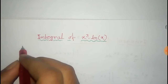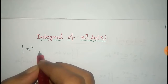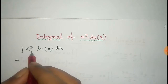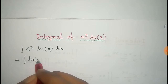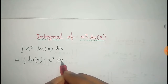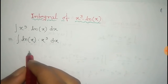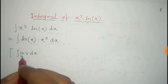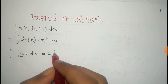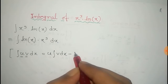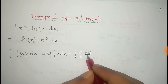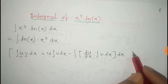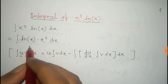In this video we will find the integral of x cube into log x, that is the integral of x cube into log x dx. Here we use log x as the first function and x cube as the second function. To find the integral we use the formula of integral of uv dx, where u is the first function and v is the second function. The formula is given by u times the integral of v dx, minus the total integral of the derivative of u into the integral of v dx.